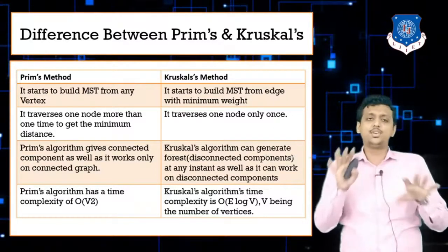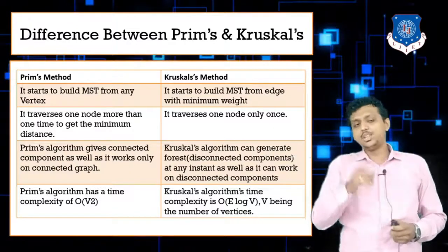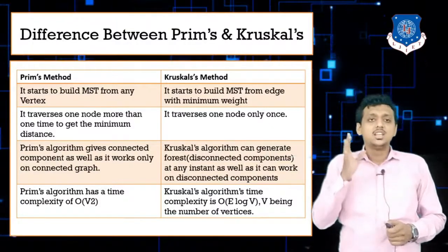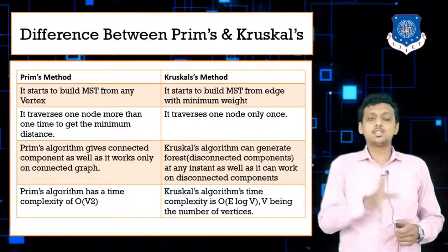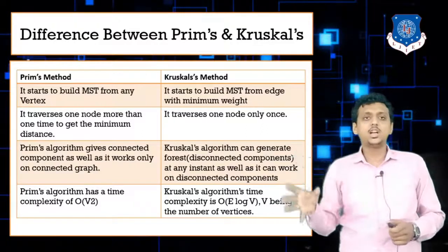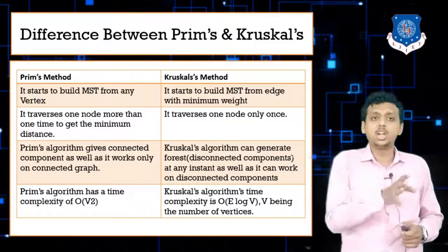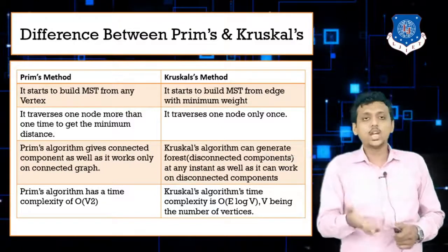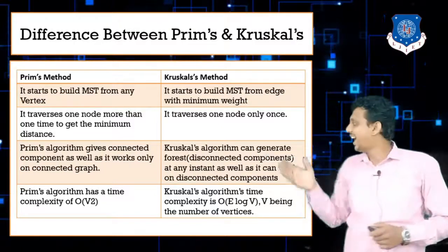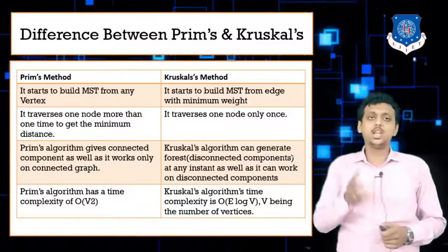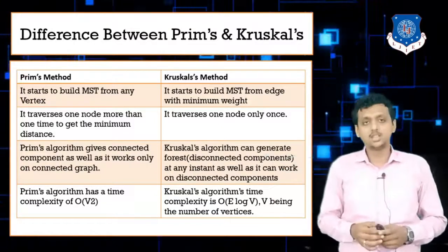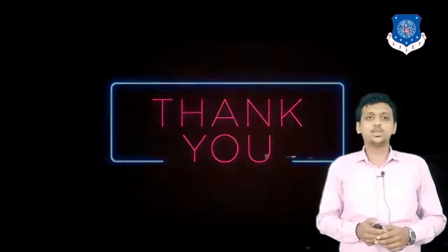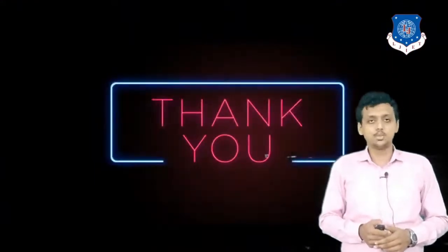Regarding time complexity: Prim's algorithm has a time complexity of O(V²), while Kruskal's algorithm has a time complexity of O(E log V), where V is the number of vertices. If an exam question asks you to convert a graph to MST without specifying the method, you can use either Prim's or Kruskal's. That's it for today's lecture — thank you so much.